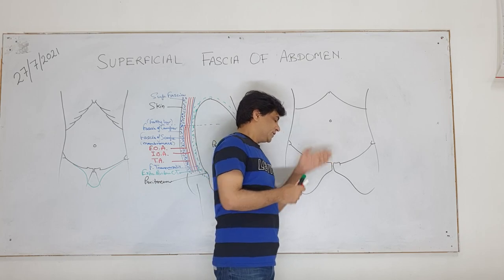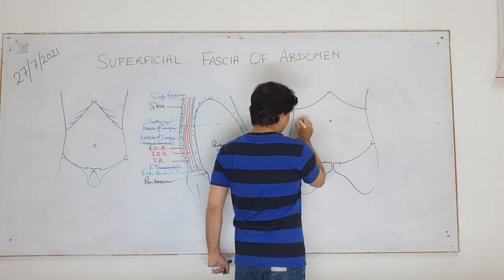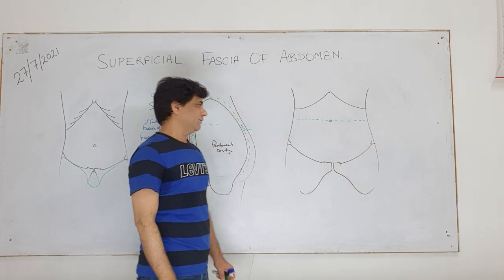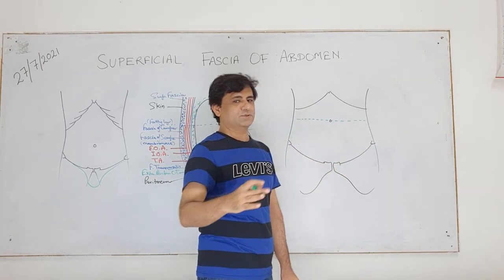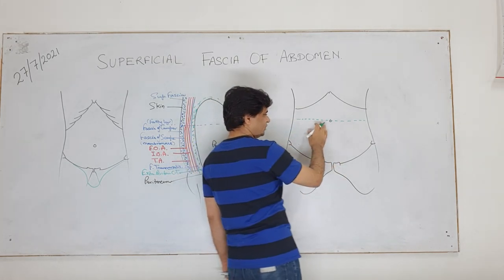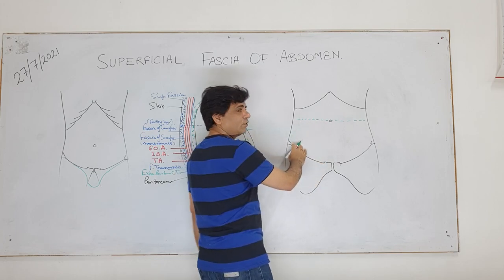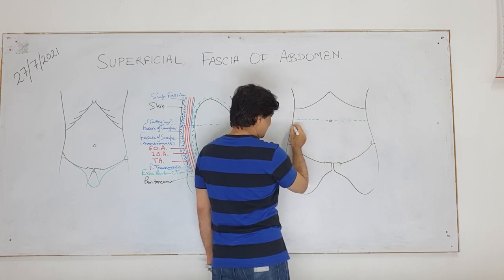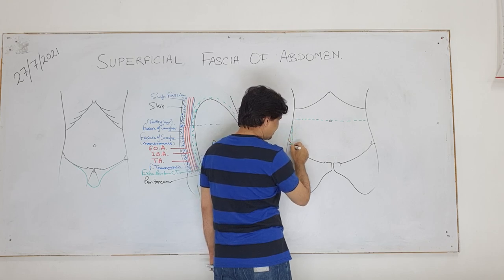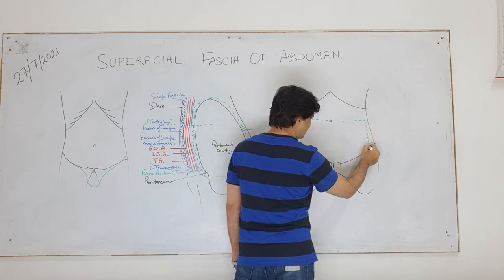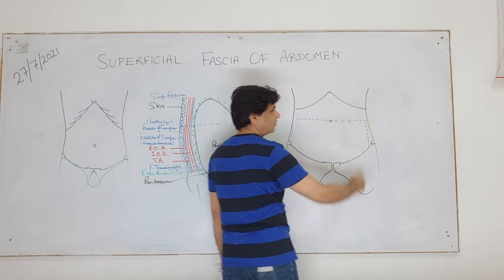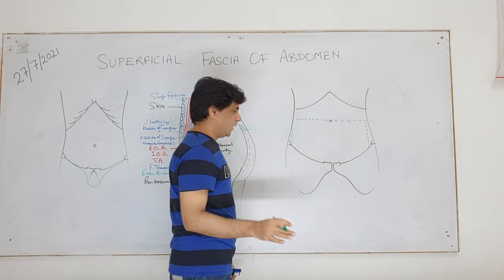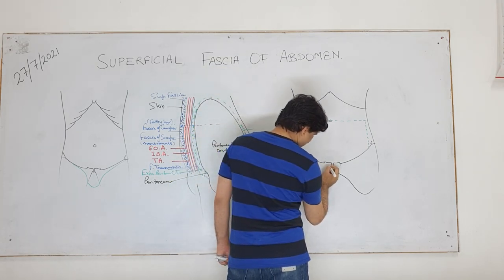At the level of the umbilicus, the superficial fascia was modified into a fatty layer and a deeper membranous layer. On the two sides it merges and becomes continuous as a single sheet on the sides. Now this fascia of Scarpa when it descends down, we have the superficial inguinal ring, from where the spermatic cord descends, suspending the testes.